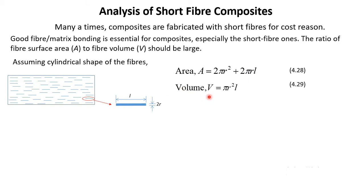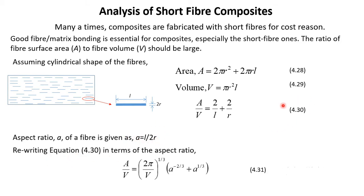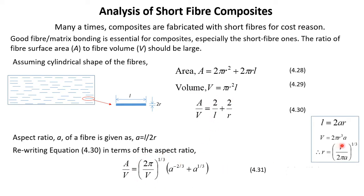The volume of this short fiber is given by πr²L. Therefore the area-to-volume ratio A/V is obtained by dividing the total surface area by πr²L, giving 2/L + 2/r. If we define the aspect ratio A of a fiber as L over 2r, we can rewrite equation 4.30 in terms of aspect ratio with a small calculation, converting it into a new expression.